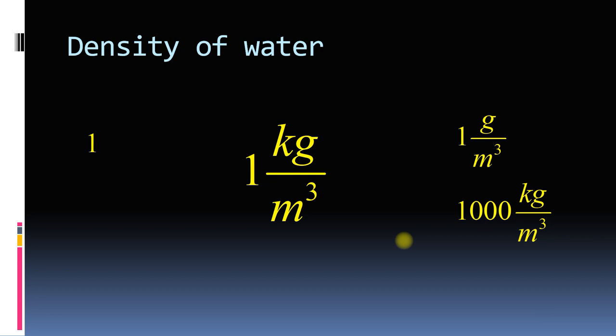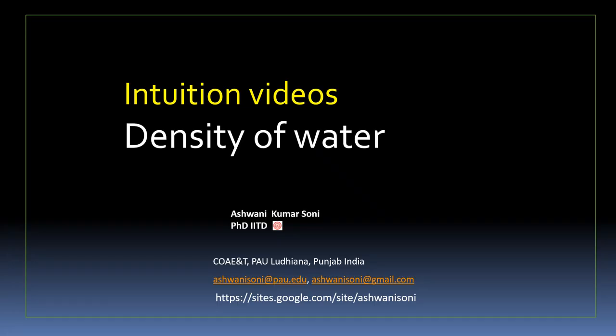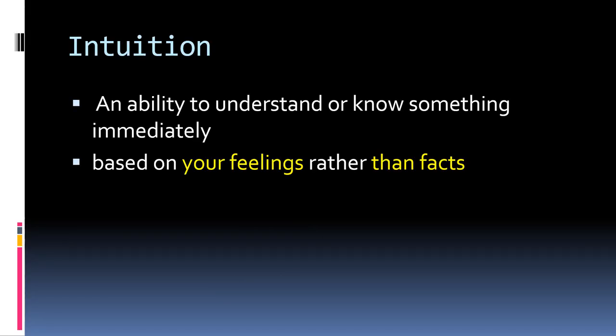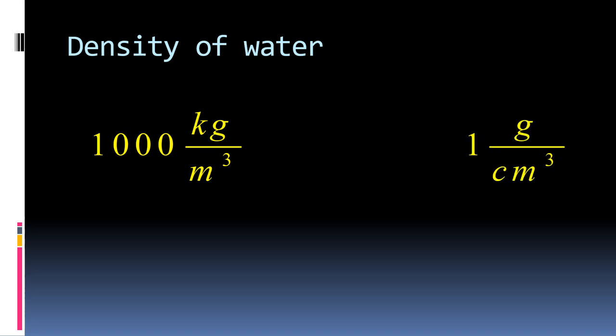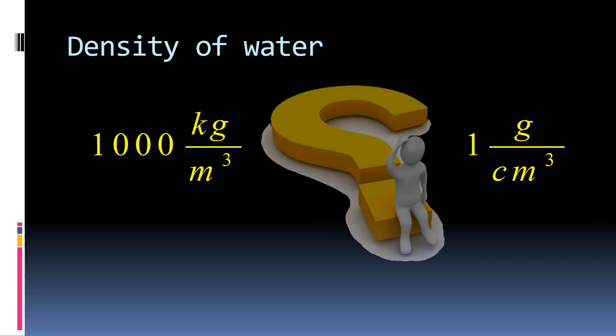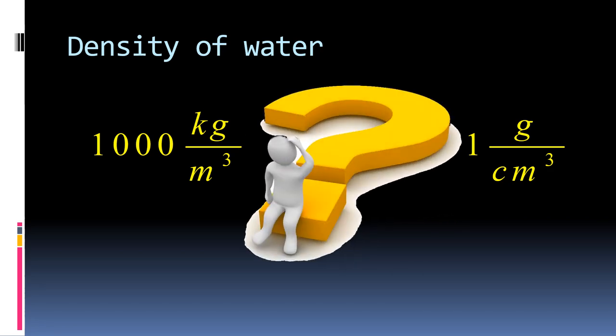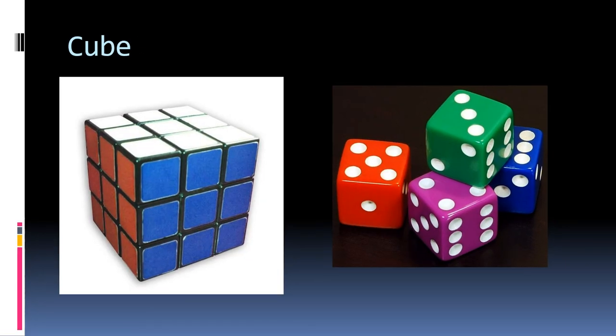Then this video is for you. Density of water is 1000 kg per meter cube or 1 gram per centimeter cube. Sometimes I ask this from college going students, they are unable to tell. Now to understand density of water we have to know what is a cube.